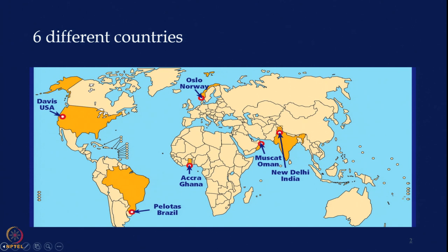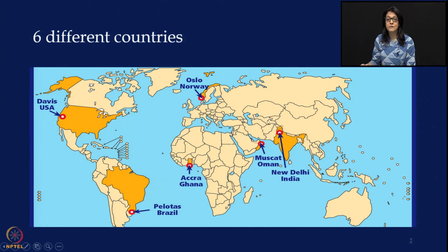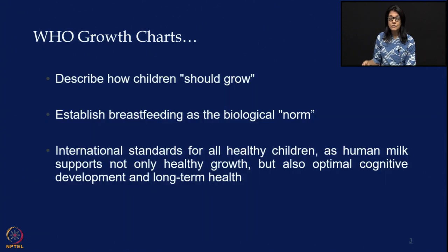Let us start with the WHO Multicenter Growth Reference. This was a study done between 1997 and 2003 and they took data from children from 6 different countries: USA, Norway, Ghana, Brazil, Oman, and India. India was part of this multicenter study, which is important — 6 different countries were involved including the US and India.